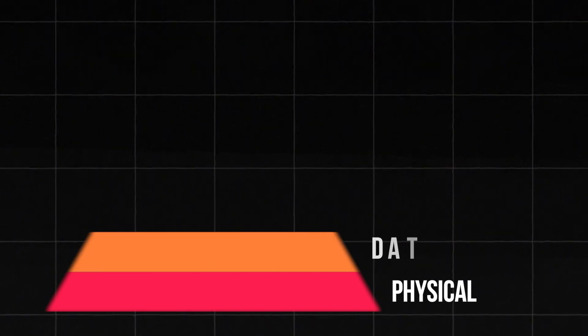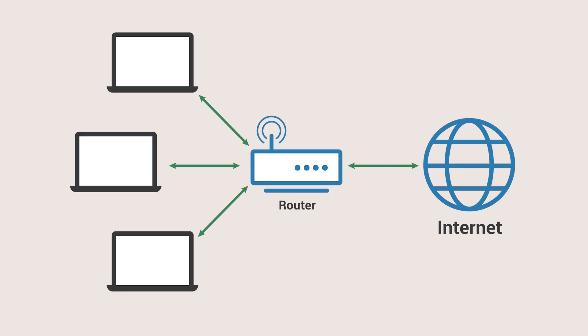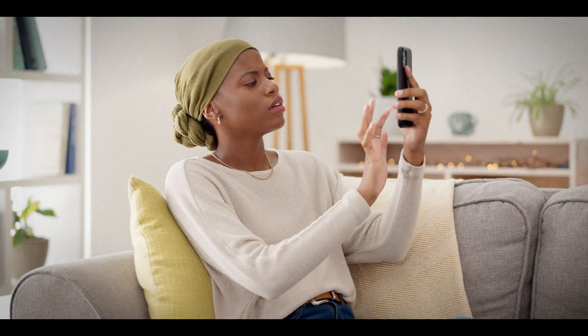Next, we have the data link layer. Here, data gets organized into frames and devices get their unique MAC addresses — think of them as license plates for your gadgets. This layer handles communication within a single network, like your home network, using tech like Ethernet. Switches live here, directing traffic efficiently. If your network's sluggish, this layer might be where the bottleneck hides.